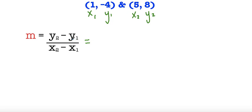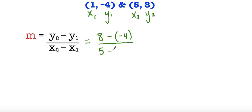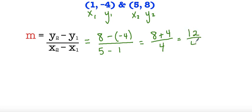So m equals y sub 2 which is 8, minus y sub 1 which is negative 4, divided by x sub 2 which is 5, minus x sub 1 which is 1. So 8 minus negative 4 is the same thing as 8 plus 4, divided by 5 minus 1 which is 4. So 8 plus 4 is 12, divided by 4 is equal to 3. So our slope is 3 — m equals 3.